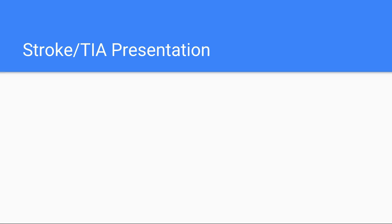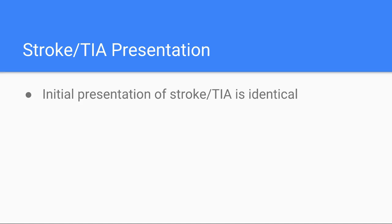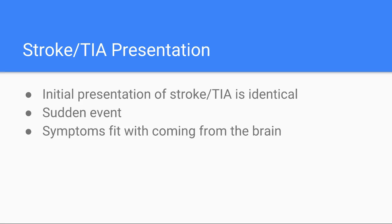So how do strokes and TIA present? The initial presentation of them is the same. It's a sudden event, and symptoms come on over seconds to minutes. Only rarely do symptoms progress over a longer time frame, and that's normally because of more than one event occurring in short succession. The symptoms themselves have to fit with originating from the brain, as opposed to the spine or peripheral nerves. As a general rule, sudden onset of neurological symptoms of any type — especially if unilateral — is possibly stroke, and it would be reasonable to manage it initially as if it was, with rapid investigations and quite probably specialist review.